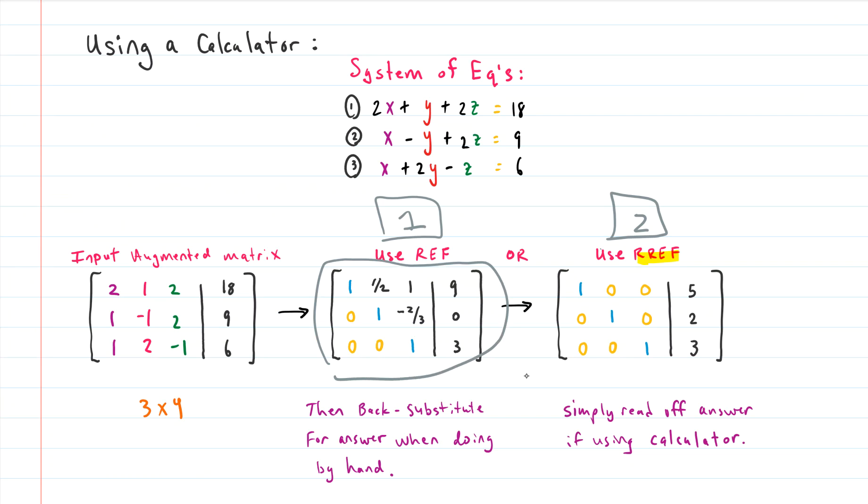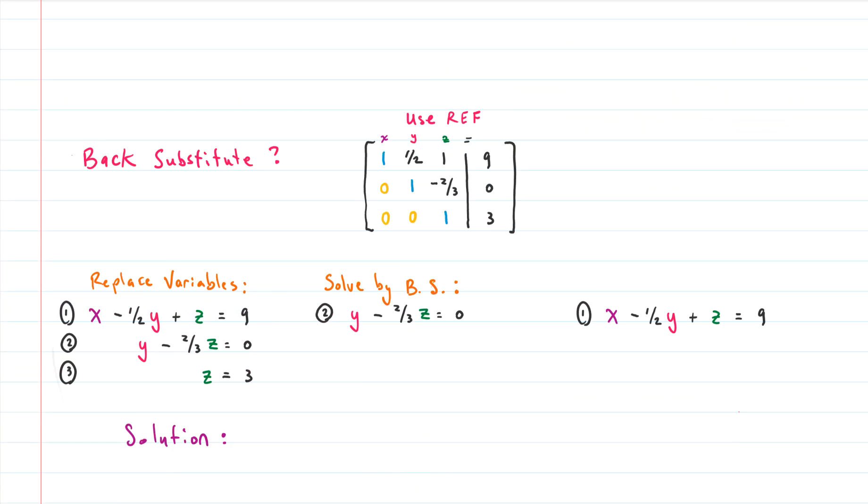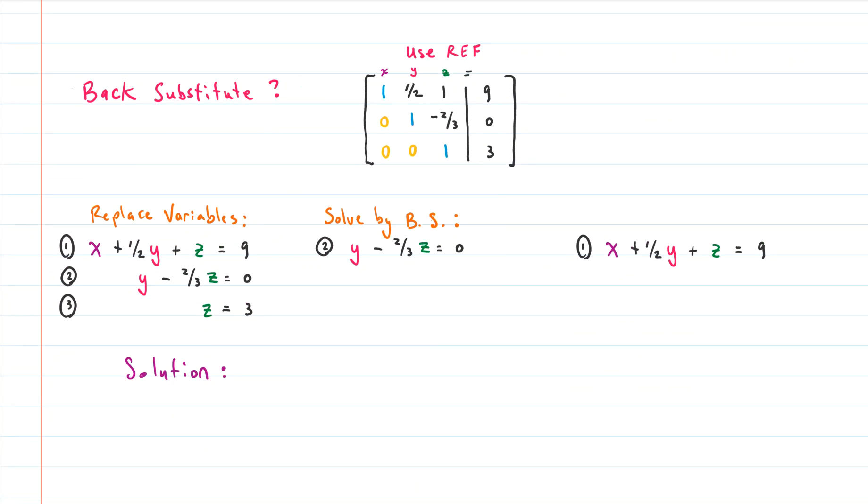And that is what we had right here. So there's the row echelon form. Now we can just back substitute. And if you're thinking what is back substitution, I have another video that talks about it a lot, or we can just do it right here really quickly. The first thing we need to do when we back substitute is we need to go back to our systems of equations form.